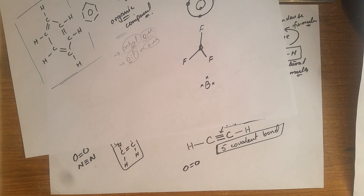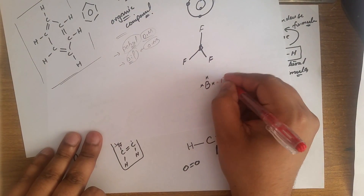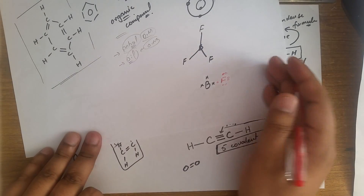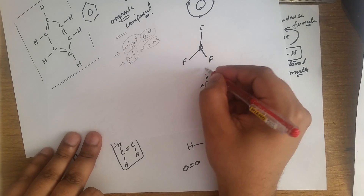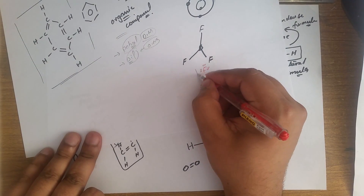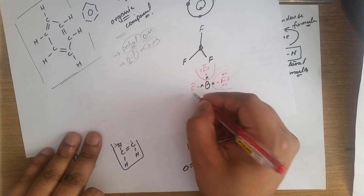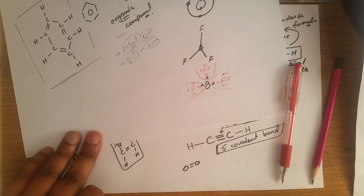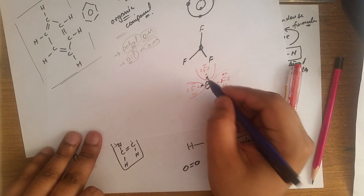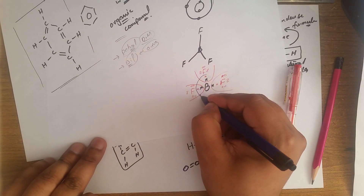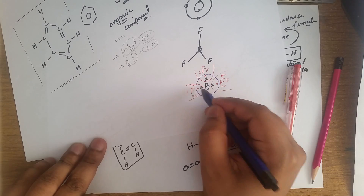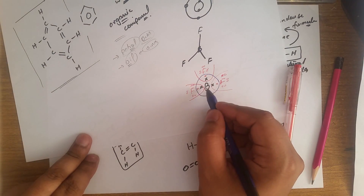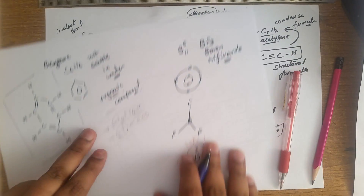BF₃ is an electron deficient molecule. Bonding always occurs from the outer shell. Boron has only 3 outer shell electrons. After sharing 3 electrons with fluorine atoms, each fluorine achieves 8 electrons (octet). However, boron ends up with only 6 electrons around it — it cannot achieve 8 electrons like neon. That is why BF₃ is electron deficient.